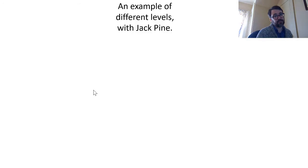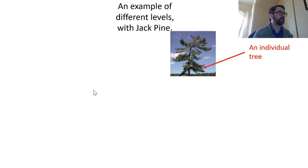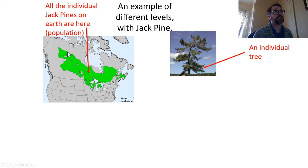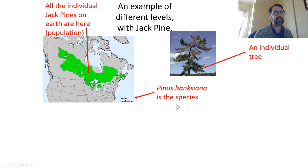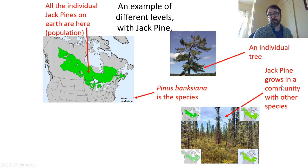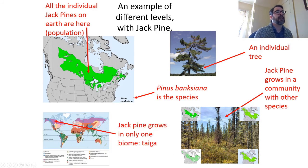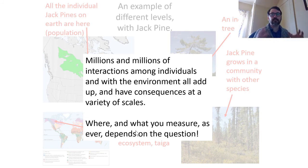Here's jack pine used as an example across all levels of organization. An individual jack pine tree; all individuals form the population within the green range area including the Indiana sand dunes. Pinus banksiana is the species, defined by interbreeding ability. Jack pine grows in a community with larch, black spruce, mosses, and other species. It primarily grows in one biome: the taiga. Millions of interactions among individuals and with the environment add up and have consequences at a variety of scales.